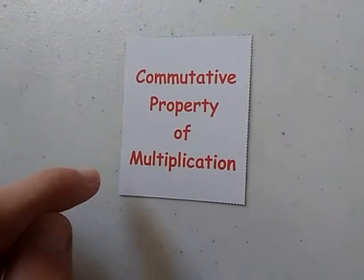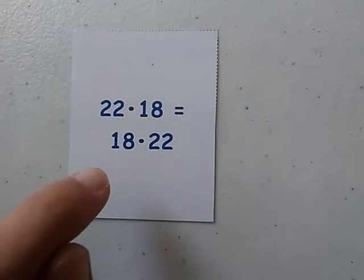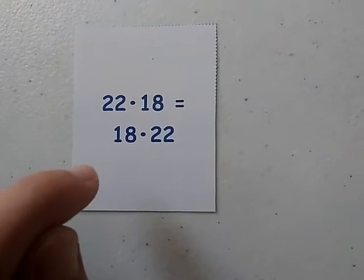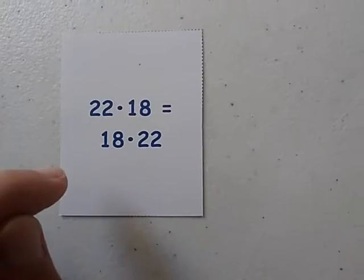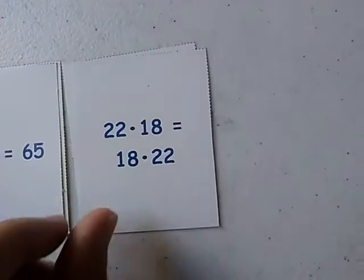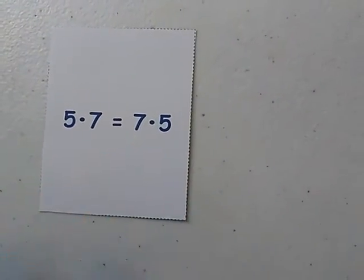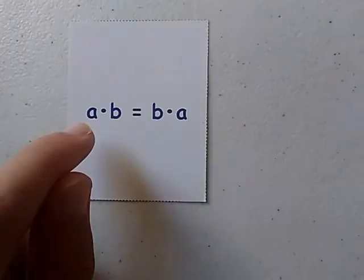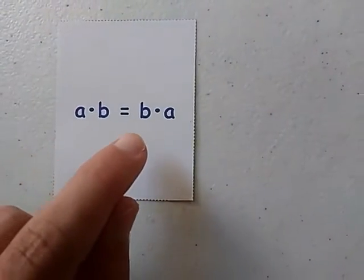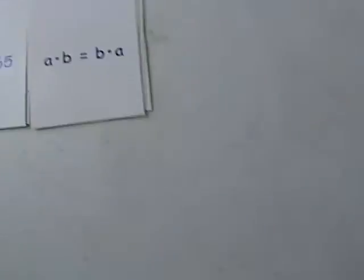Commutative Property of Multiplication. 22 times 18 equals 18 times 22. Note that if we switch the factors, the product does not change — so this is the Commutative Property of Multiplication. 5 times 7 equals 7 times 5; it does not matter the order of the factors. A times B equals B times A. We completed the stack of the Commutative Property of Multiplication.